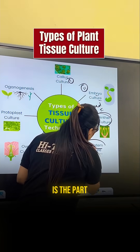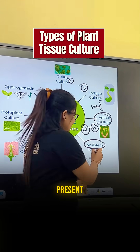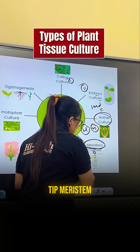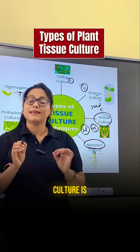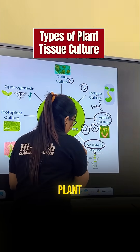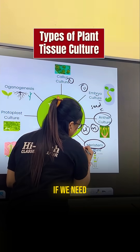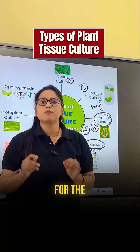Meristem culture: the meristem is the part of the plant present at the shoot tip. Meristem culture is used to produce virus-free plants — if we need a virus-free plant, we go for meristem culture.